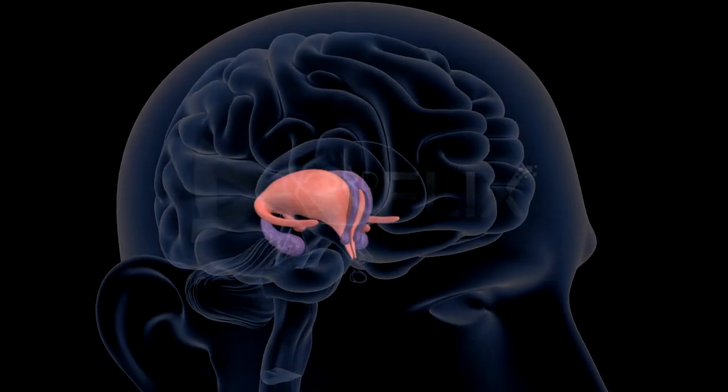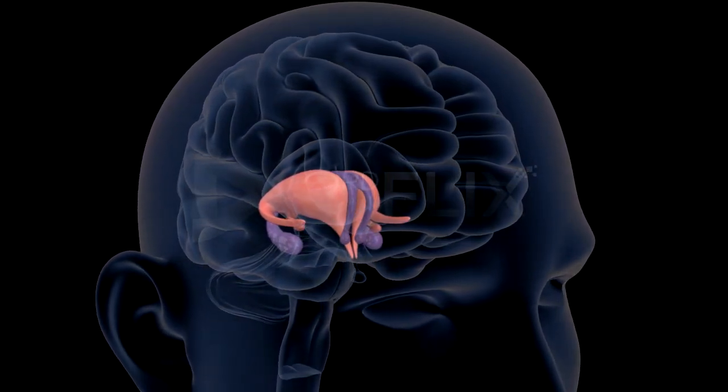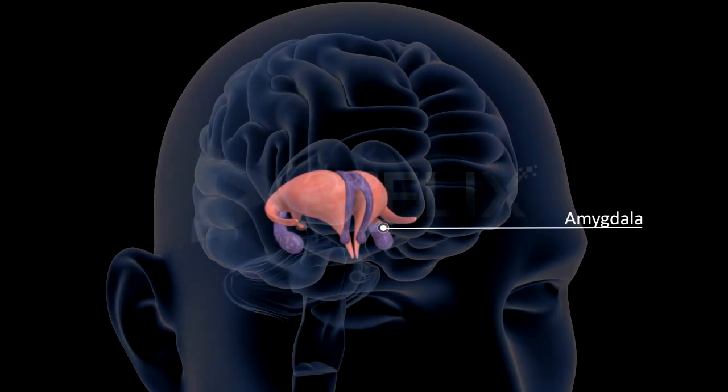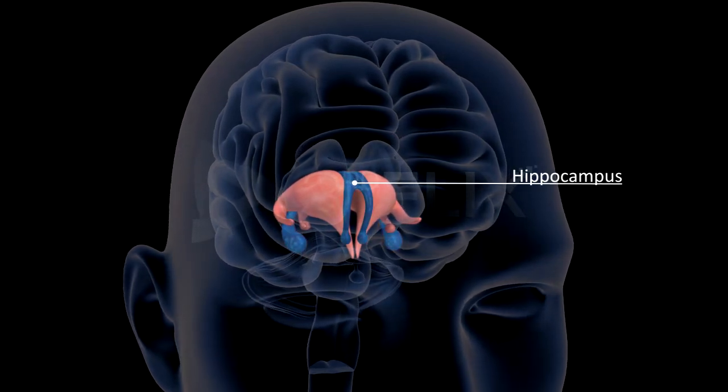The limbic, lip-like system. The inner parts of the cerebral hemispheres and a group of deep associated structures, like the amygdala, hippocampus, etc., form the limbic system.